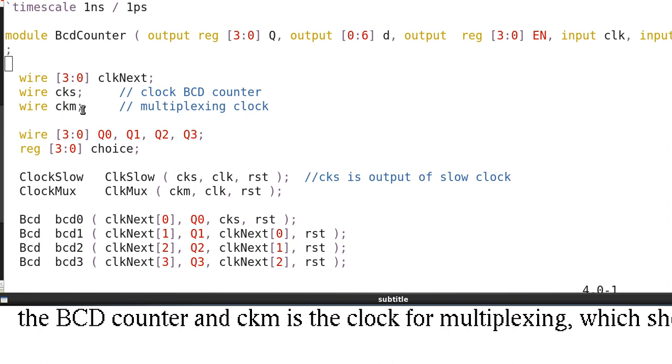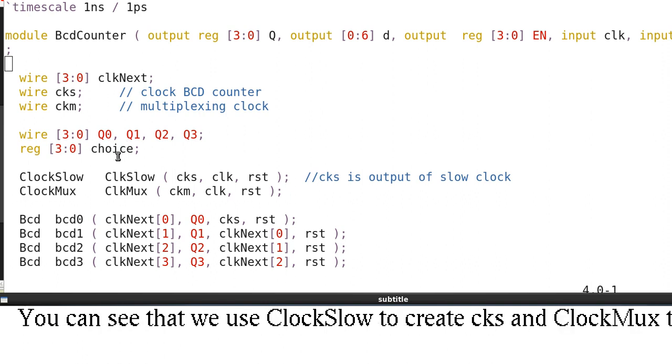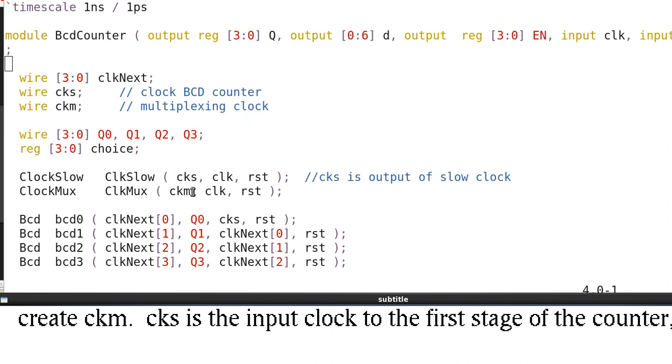And CKM is the clock for multiplexing, which should be faster than CKS. And choice here is for selecting a digit. You can see that we can use clock slow to create CKS and clock mux to create CKM. CKS is the input clock to the first stage of the counter.